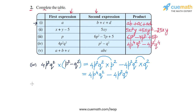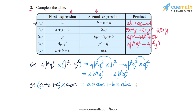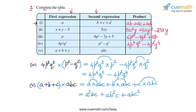In part five we multiply a plus b plus c, a trinomial, with a b c, a monomial. Applying the distributive law gives a into a b c, plus b into a b c, plus c into a b c. a into a b c has two repetitions of a giving a square b c; b into a b c has two repetitions of b giving a b square c; and c into a b c has two repetitions of c giving a b c square. The answer for part five is a square b c plus a b square c plus a b c square, completing question two.